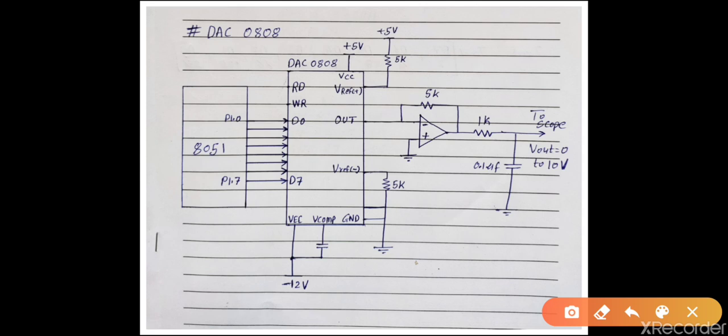You can see Port 1 of the microcontroller is connected to D0 to D7 pins of the DAC. These D0 to D7 pins are the digital input pins of DAC 0808. This is the output pin — the analog output pin. The DAC provides analog output in the form of current I_out.